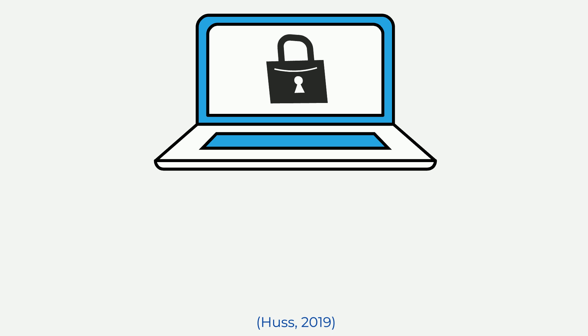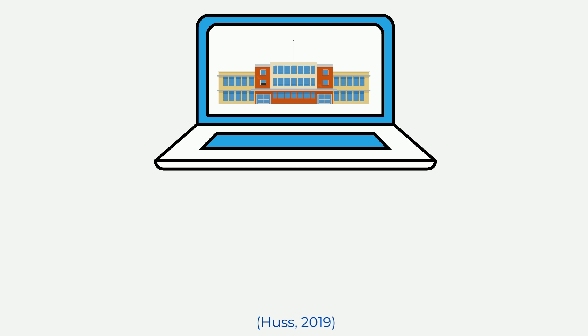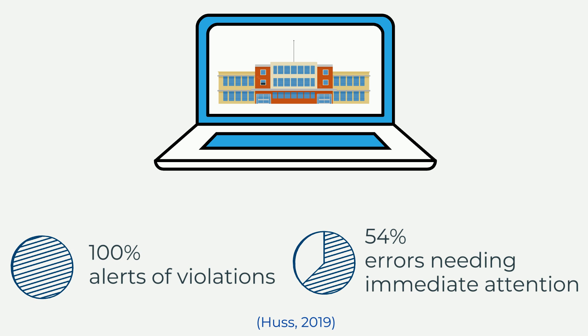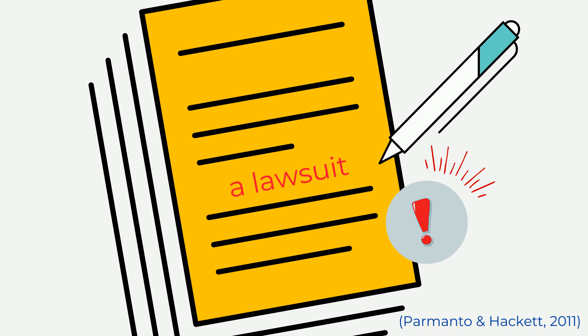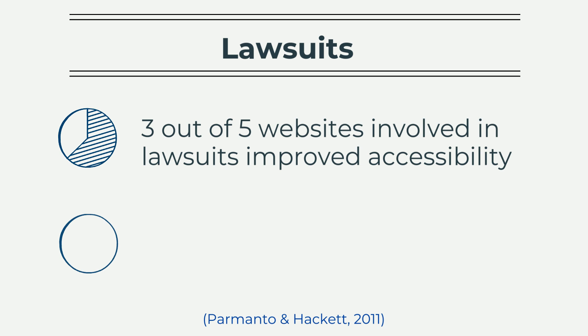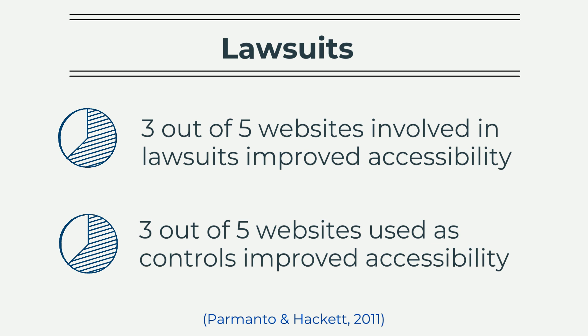With all the resources available, inaccessible websites should be history. However, recent studies show that out of 150 middle schools, all had alerts of violations and 54% had errors that require immediate attention. Given the institution's priority to reach all their students, it was expected that this focus be applied to their website as well. Lawsuits are sometimes brought up in response to barriers of web accessibility; however, it is not conclusive that lawsuits result in accessibility improvements. In fact, the same number of control websites studied changed their accessibility as the ones involved in lawsuits.